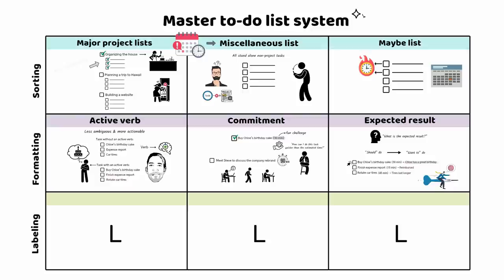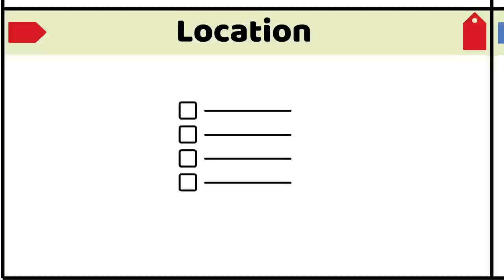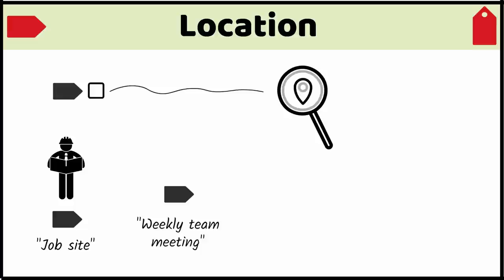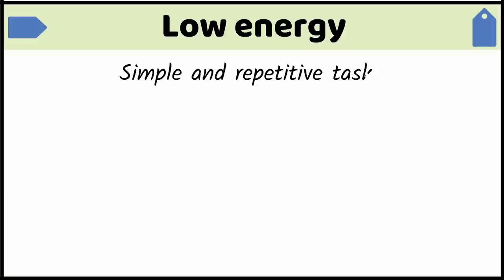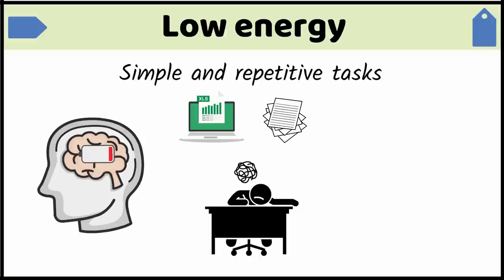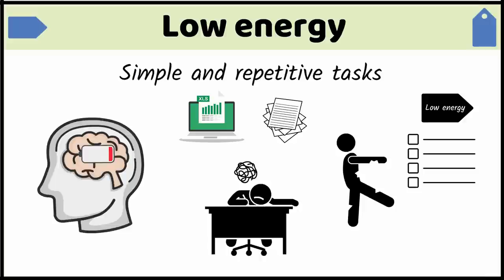Now let's talk about the LLL labeling system. You will greatly enhance your to-do list system if you add three labels to your tasks when possible: location labels, a low energy label, and a less-than-15-minutes label. Depending on the to-do list application you use, these labels might be colored flags or tags — if you can't use labels, just create three additional lists. Assign a location label to tasks you must do in a specific location, like job site for a construction manager, weekly team meeting for an office manager, or client office for a sales manager. Next, add a low energy label to simple tasks that require minimal mental effort, like repetitive administration work. When you don't feel like working but need to get stuff done, you can filter by low energy and get a list of tasks you can attack in a zombie-like state.